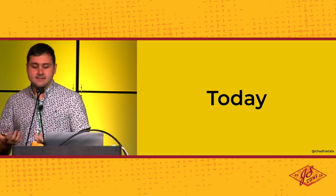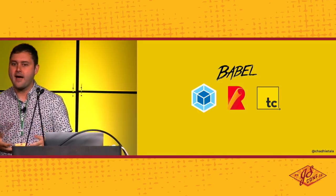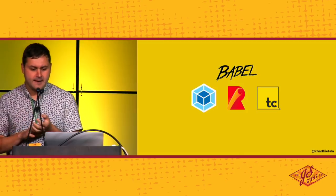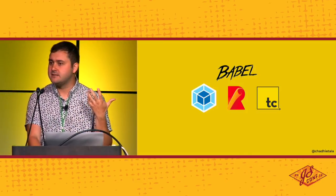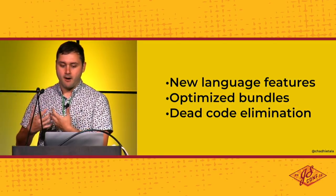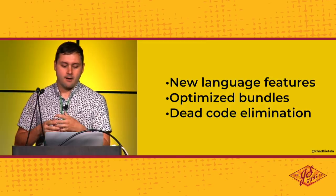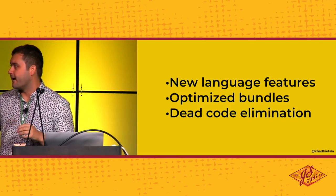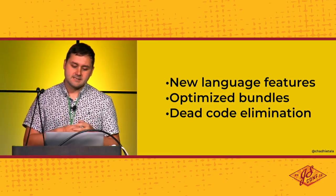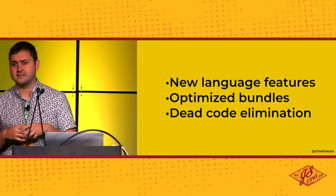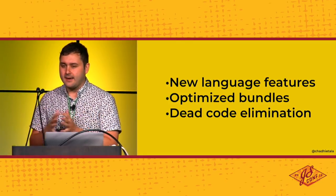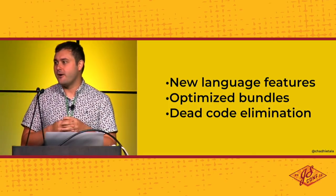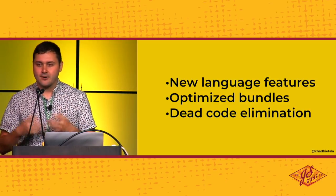And so that brings us to today. We have really great tools — Webpack, Rollup, and Babel has superseded Traceur in the transpilation space. These tools build on everything that came before: they allow you to use new language features, produce more optimized code bundles, and do different forms of dead code elimination like scope hoisting and tree shaking. You'd think in 2018 we're at the pinnacle of performance, having had 15 years of sophisticated tool chains. But I'd actually say there are quite a few problems in what we do today.